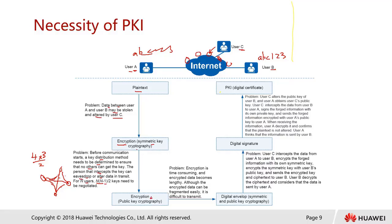This brings us to the third type: encryption using public key cryptography. Every user who wants to use the Public Key Infrastructure must go through a key generation process. This generates a pair of keys: a private key and a public key. The public key can be shared with anyone — it's supposed to be public. The private key must be kept secure and never exposed.